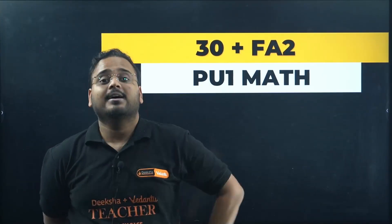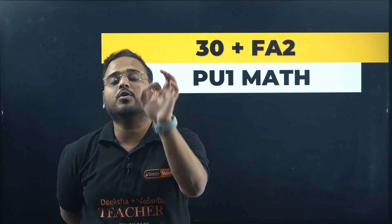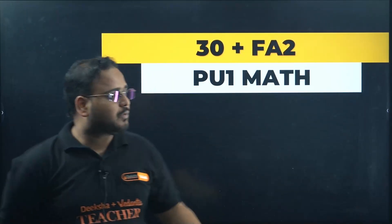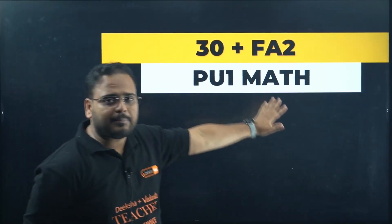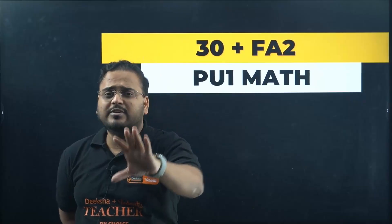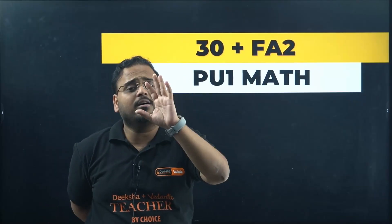Wait right there! I'm here with your ultimate guide to score 30 plus marks very easily in FA2. You heard me right - the ultimate guide which will help you score 30 plus marks very easily in your FA2 PU1 math. I'm going to give you a list of chapters and questions - MCQs, 2 markers, 3 markers, and some 4 markers.